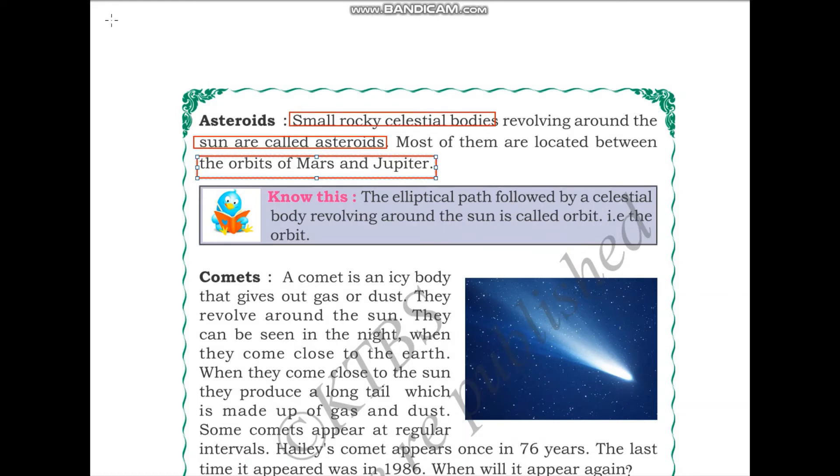Know this: The elliptical path followed by a celestial body revolving around the sun is called an orbit. The path that is followed by a celestial body is called an orbit.